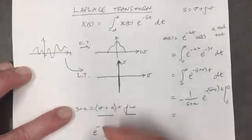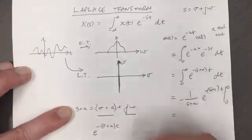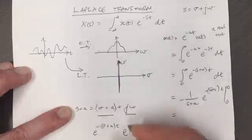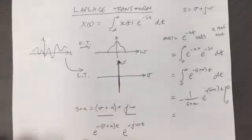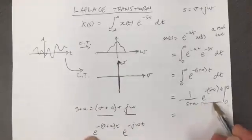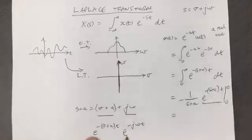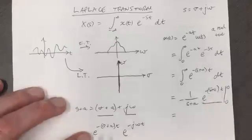With the t, times e to the minus j omega t. Okay, so this expression here is what this expression here is. We can write it this way, and now there's two parts.